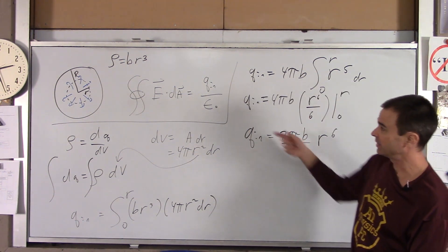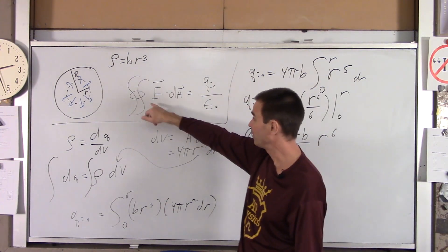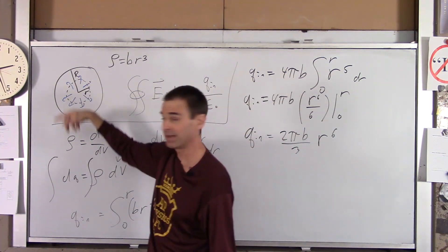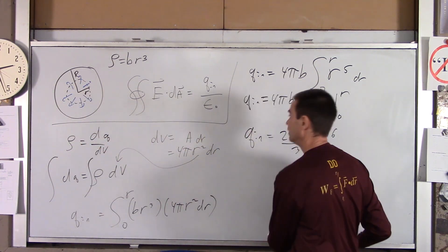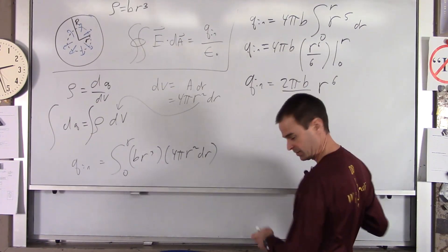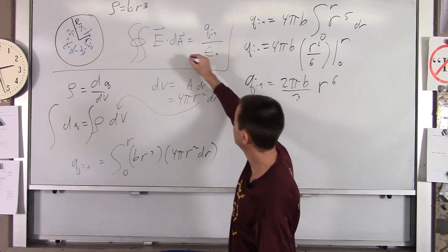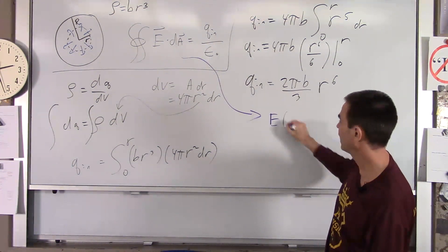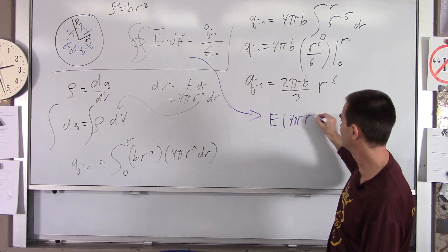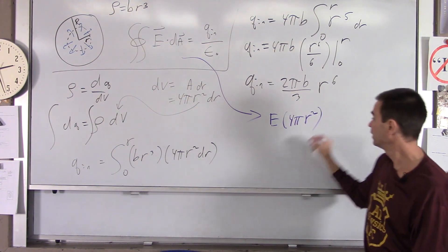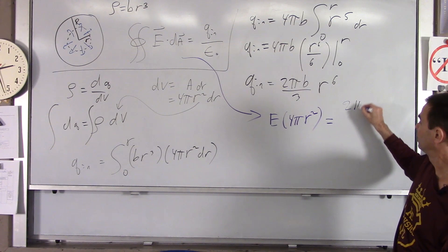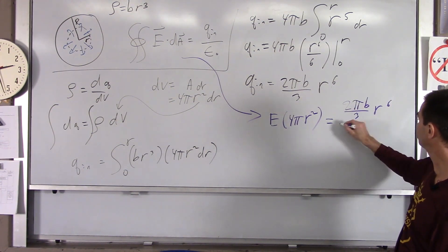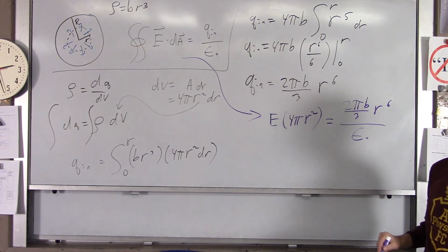The 4 and the 6 partially reduce. You get 2 thirds. So you got q_in equals 2 pi b over 3 times r to the sixth. And that's the hardest part of this whole problem. Once you've got q_in, the rest of it's easy. So now we plug that in right there.